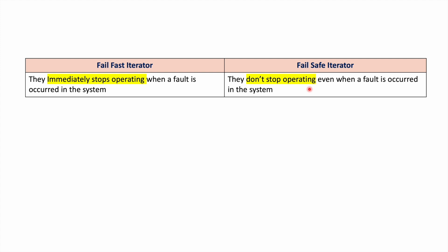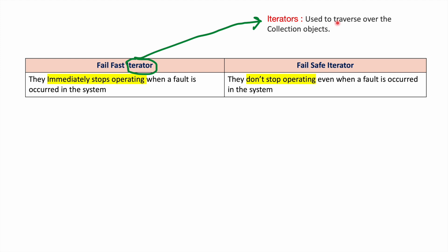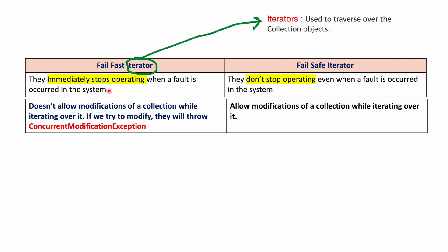FailSafe iterators won't stop the process. Iterators are used to traverse over the collection objects. FailFast iterators do not allow modification of a collection while iterating over it. If we try to modify it, they will give ConcurrentModificationException. FailFast iterators won't allow modifications when we are iterating. That is the reason when we are working on HashMap, when we are traversing and performing an add operation, it is giving ConcurrentModificationException.